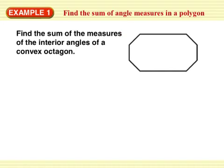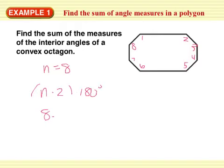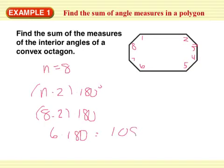So example 1, find the sum of the measures of the interior angles of a convex octagon. Okay, 1, 2, 3, 4, 5, 6, 7, 8. So we would just plug in 8 into the equation, n minus 2 times 180 degrees. 8 minus 2 is 6. So 6 times 180 is 1,080 degrees. It is that simple.